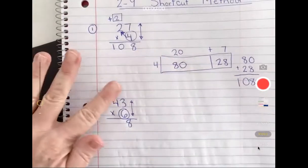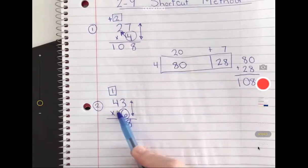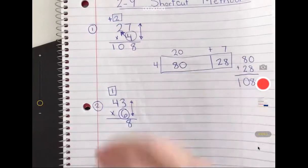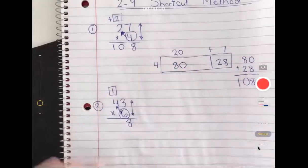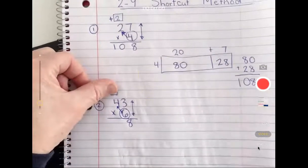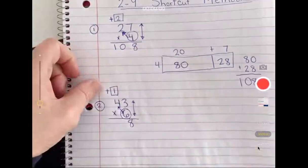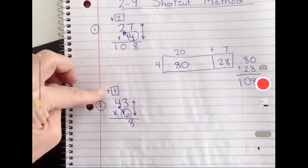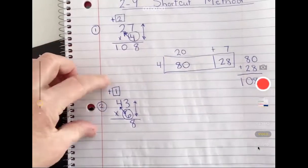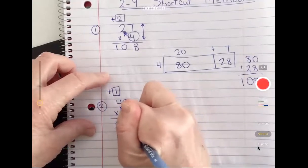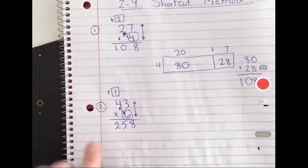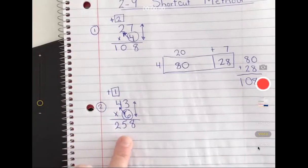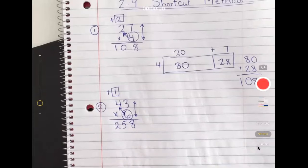Now my six needs to multiply diagonally to the four. Six times four, that's twenty four. I've got this extra one I need to add. Twenty four plus one is twenty five. I write the whole thing down because there are no more numbers. My answer is two hundred fifty eight.